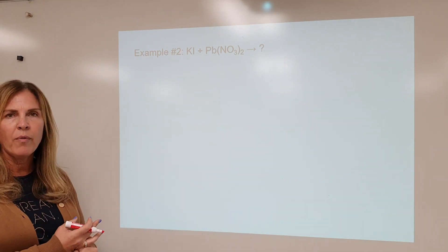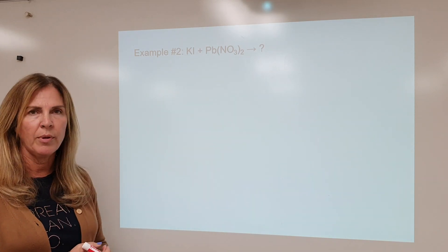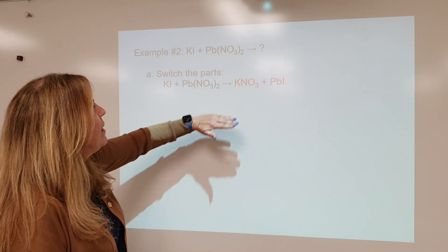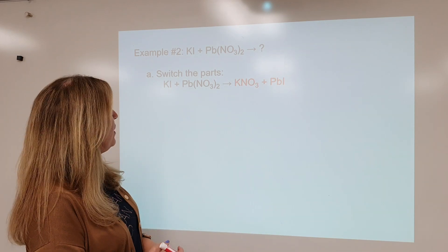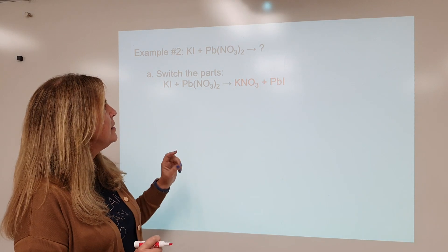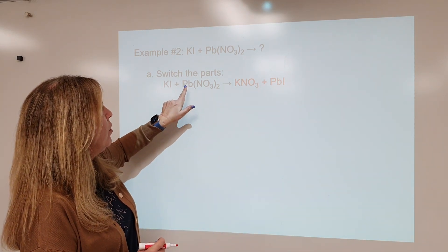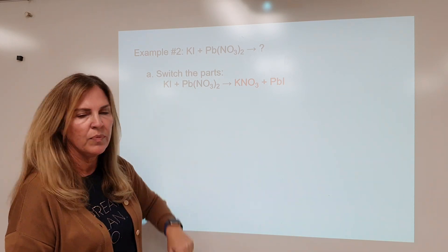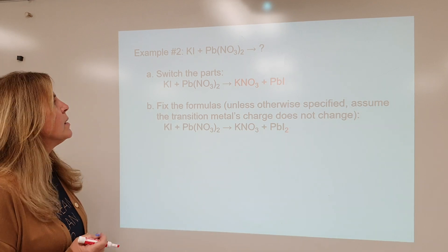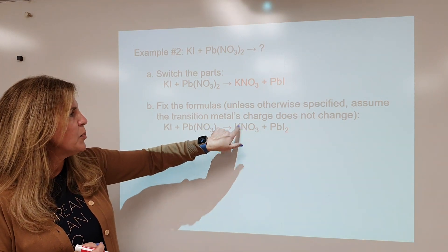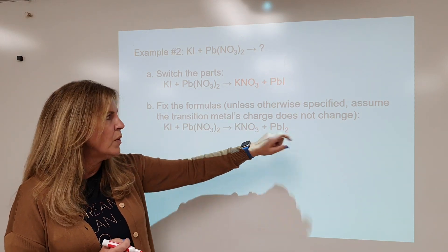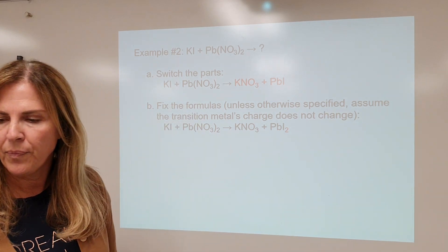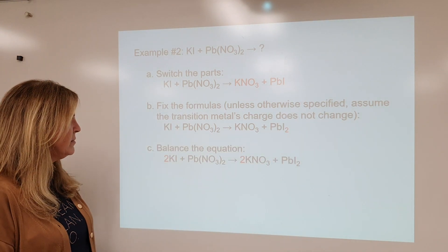Another example. Compound plus compound — double displacement. Potassium and lead are going to switch partners: KNO3 and PbI2. KNO3 is fine because potassium is +1 and nitrate is -1. PbI2 because lead carries a 2+ charge — we can determine that from the original formula using the reverse crossover method. Then balance the equation and you're done.